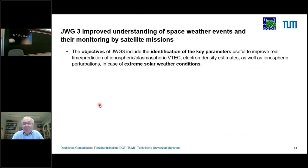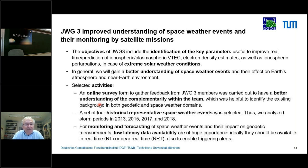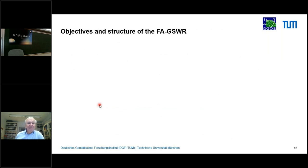The last working group focuses on improved understanding of space weather events and monitoring by satellite missions, with identification of key parameters under extreme solar weather conditions as the foreground objective. An online survey was done for better understanding of complementarity within the team. Historical space weather events were selected, related to the other working groups — four storm periods were used. For monitoring and forecasting, real-time or near-real-time data are important and will be addressed going forward.